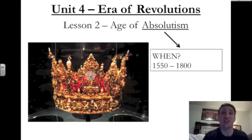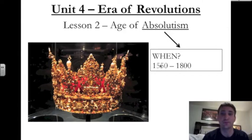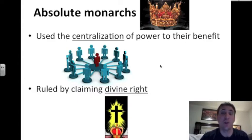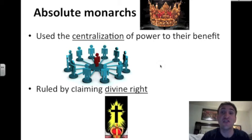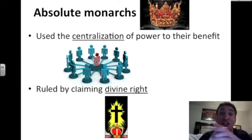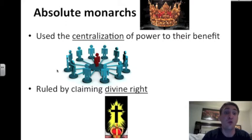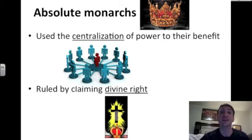When was this age of absolutism? It goes from about 1550 to 1800. Absolute monarchs — monarchs being kings and queens — they have two major traits. First, they used the centralization of power to their benefit. Centralization means the combination and consolidation of power into one person, as you see in this image. Absolute monarchs also ruled by claiming divine right. These monarchs claimed that they spoke the word of God and that God spoke to them. It's hard to argue with a ruler who says God is speaking directly to them, and that's what these monarchs told their people.